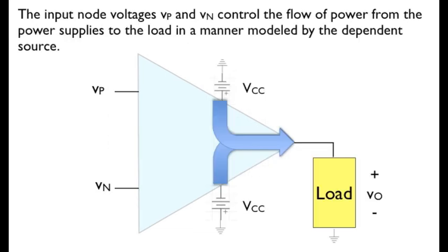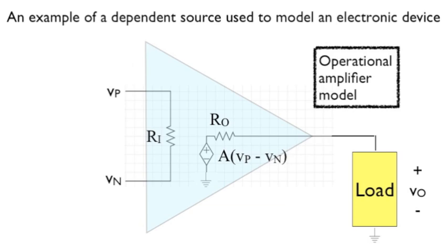By, again, clever circuit design, the values of the node voltages, V sub-P and V sub-N, essentially control the flow of power from the power supplies to the load in a manner modeled by the dependent source. And here is that dependent source doing an excellent job of modeling the combined effect of all the complicated circuitry and the DC power supplies.